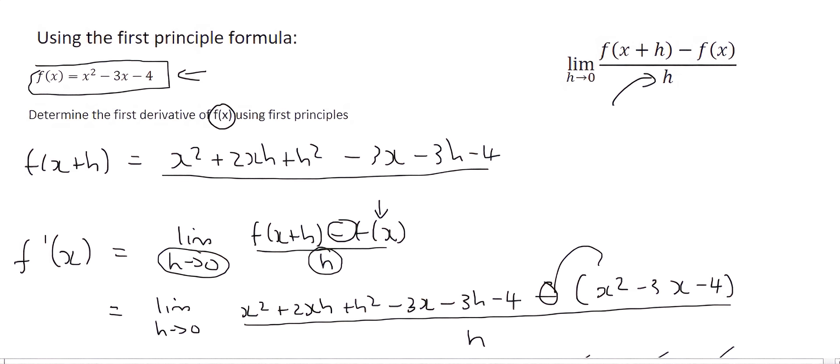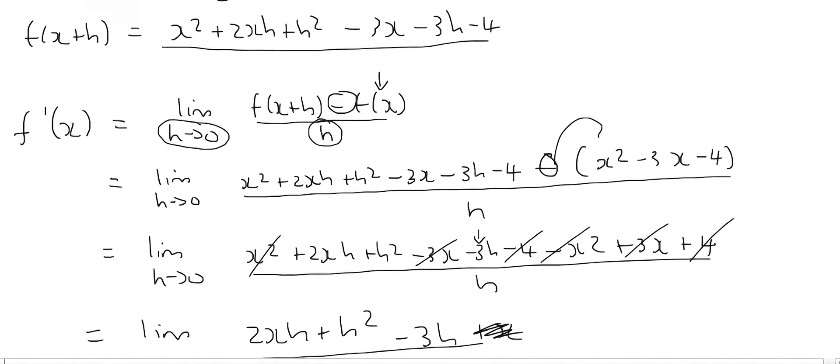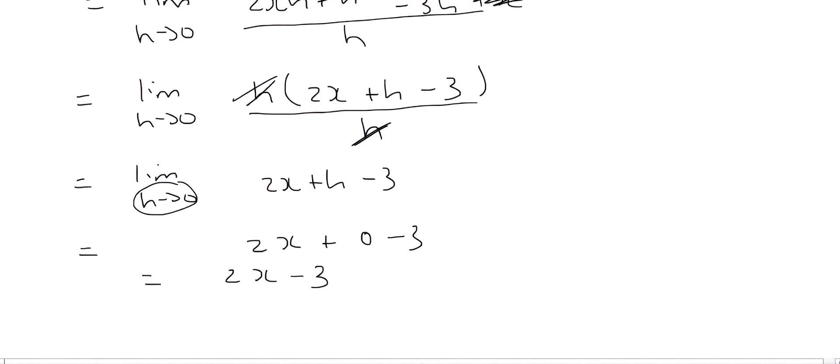So then what we do is we do this whole f of x plus h minus f of x, where things with no h's, they usually cancel out or they have to cancel out. And then we take out a common factor of h, that cancels the h at the bottom and then you can put the limit value in.